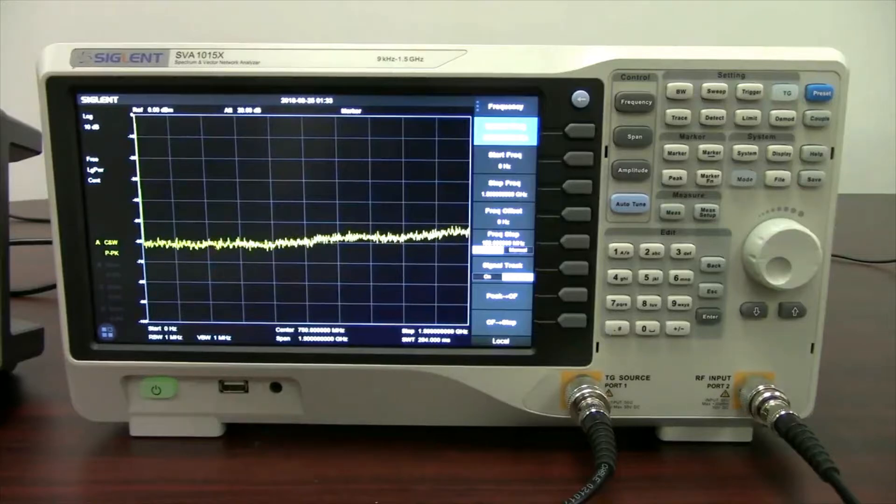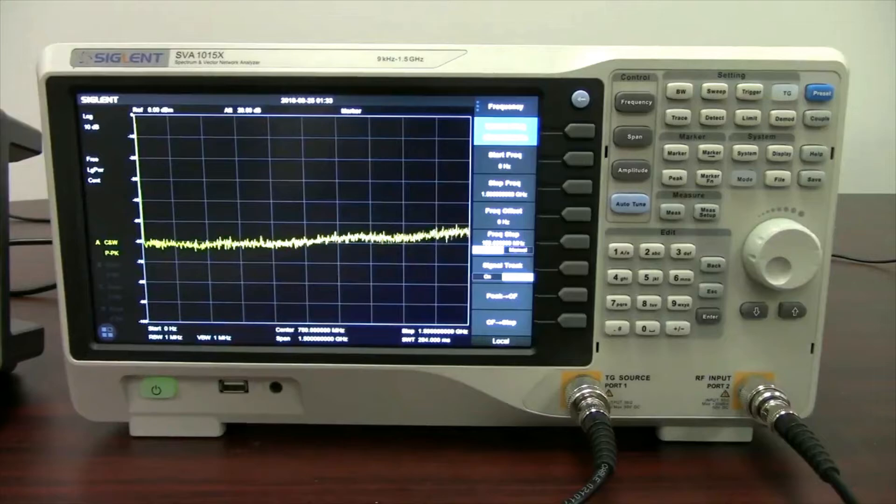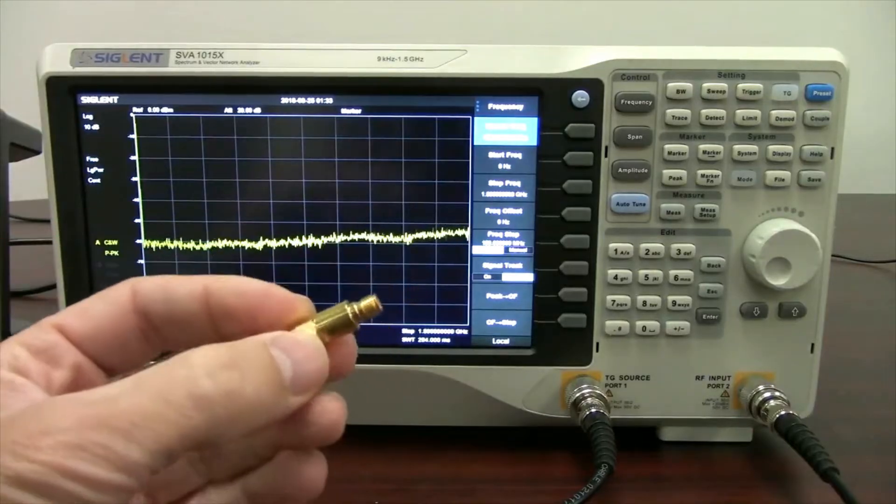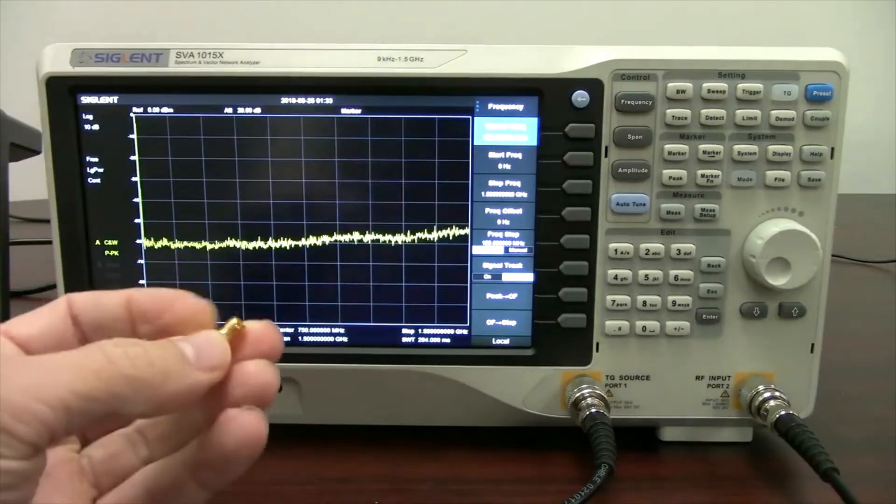In today's video we're going to take a look at the SVA1015X Spectrum and Vector Network Analyzer and we're going to use it to characterize an attenuator, actually two attenuators.